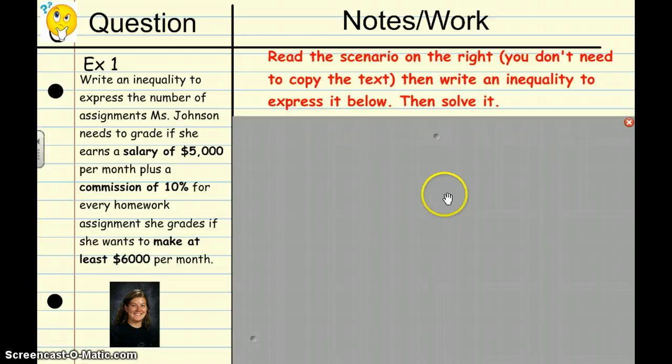Example number one, on the left read the scenario even though it says on the right. You do not need to copy the text on the left. I will read it to you or you can read it to yourself. Then try to write an inequality to express it below and solve it. Example one, write an inequality to express the number of assignments Miss Johnson needs to grade if she currently earns a salary of $5,000 per month plus a 10% commission for every homework assignment she grades if she wants to make at least $6,000 per month. Come on, you want her to make more money? Turn in those homework assignments. Think for a moment and when you have it, write down the inequality and then solve it. Now may be a good time to pause.